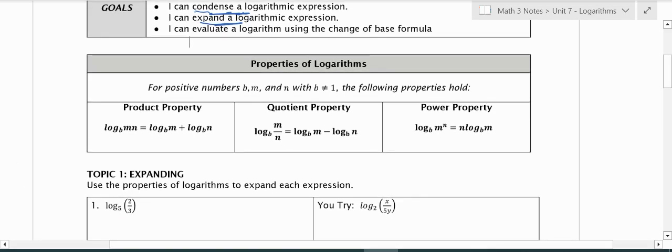The product property is the first one we're going to see. If I'm taking log base b of m times n, that's the same as taking log base b of m plus log base b of n. So I can rewrite it as two logs with addition as long as it's the same base.